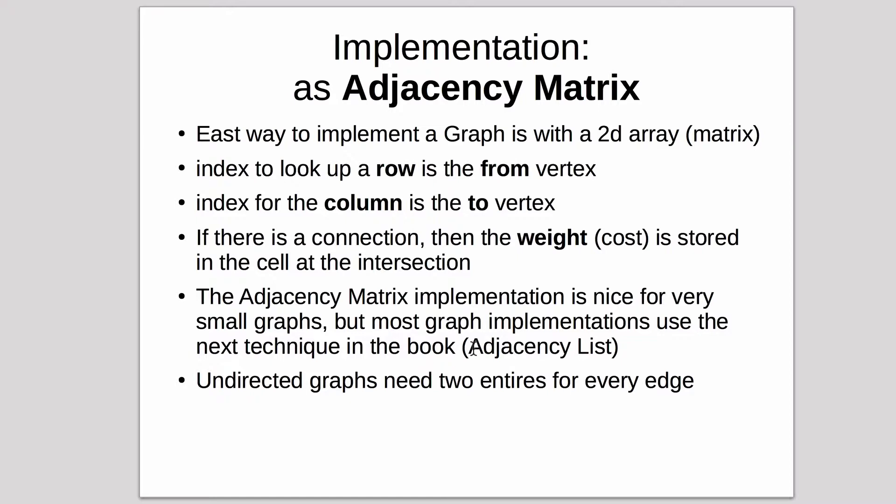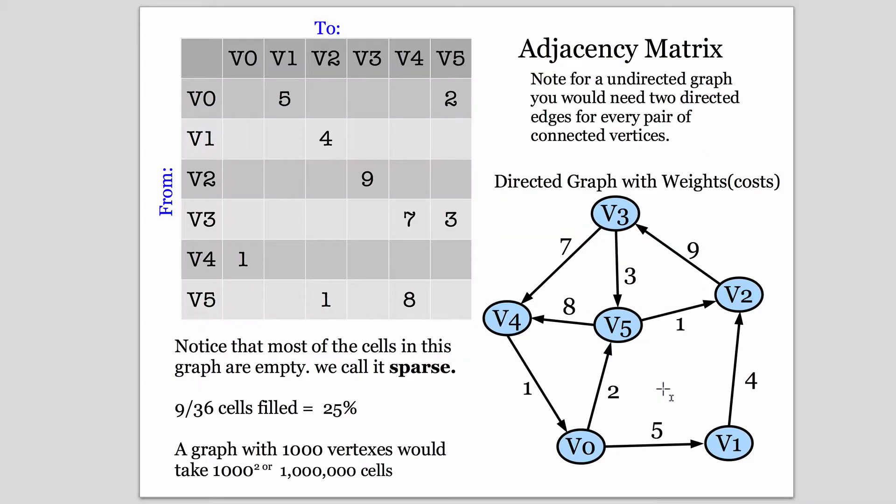So instead, most implementations you'll see online are called adjacency list implementations in different languages. And we'll cover that after we talk about this one. Note with an adjacency matrix, if you have an undirected graph, you have to enter two entries in the matrix to represent edges going in both directions.